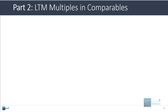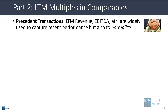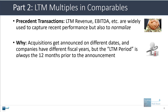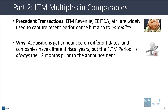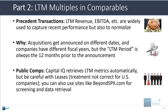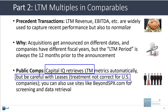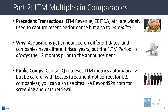LTM metrics and multiples are also important in comparable companies and precedent transactions. LTM revenue and EBITDA are widely used in precedent transactions to capture recent performance, but also to normalize deal pricing. Acquisitions can be announced on many different dates and companies have different fiscal years, but if you take the LTM period, that's standardized - it always means the 12 months before any deal was announced. If you're running public comps, CapitalIQ or FactSet will retrieve the LTM metrics automatically, though you do have to be careful about items like leases.